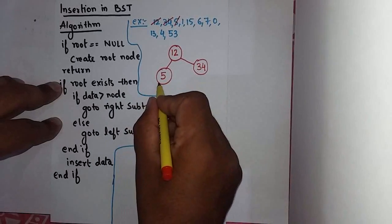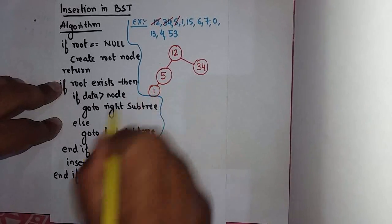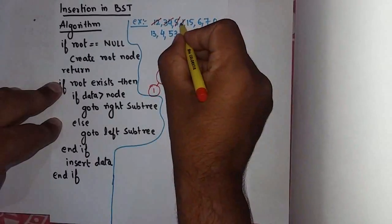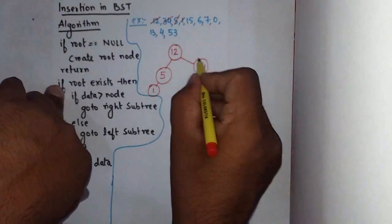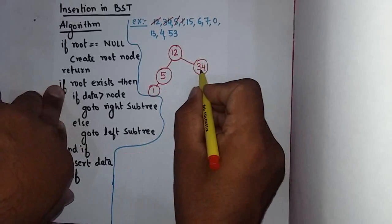1 is less than 5. 1 is covered. 15 is greater than 12, 15 is less than 34.